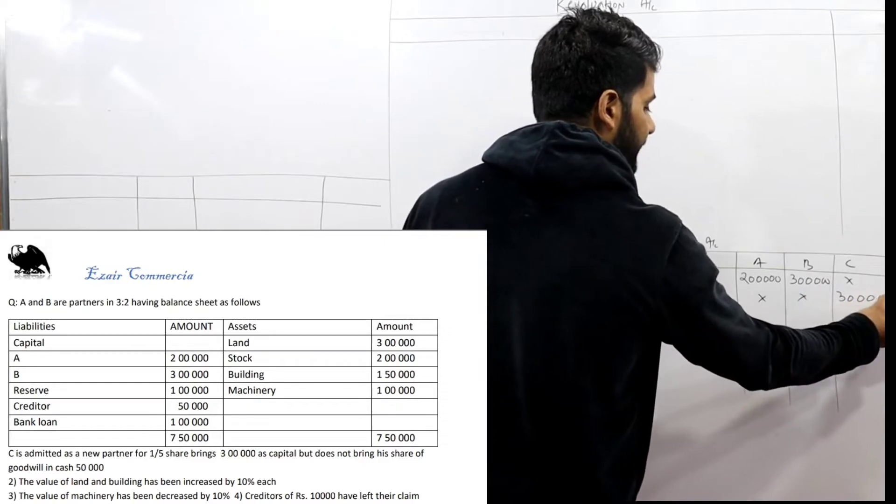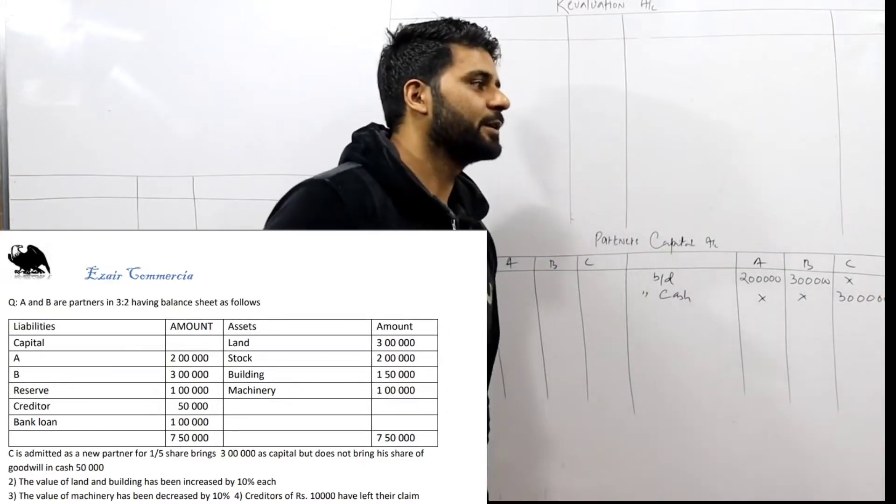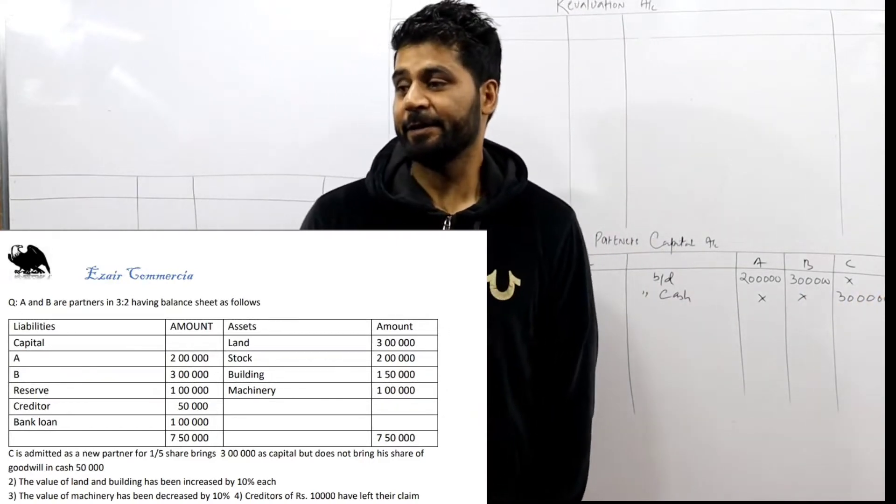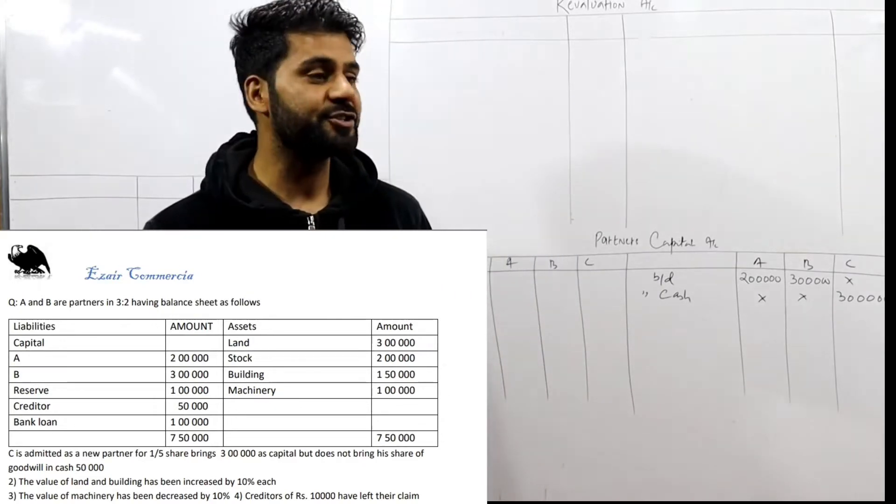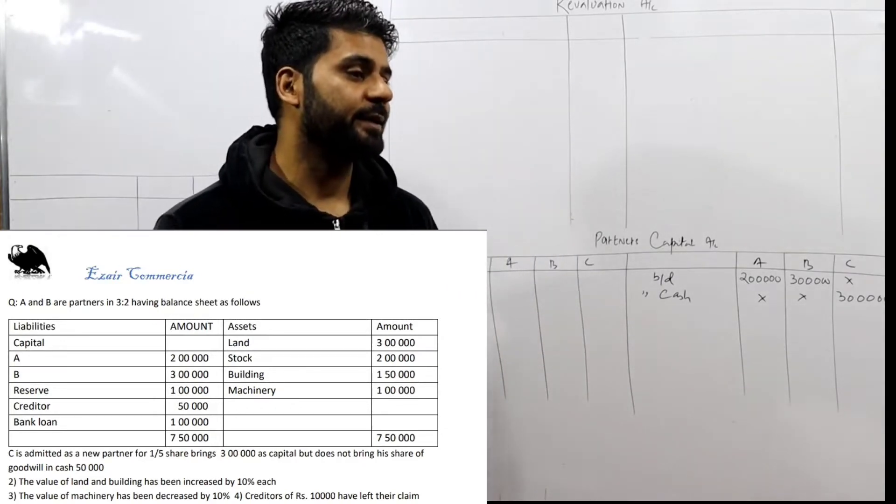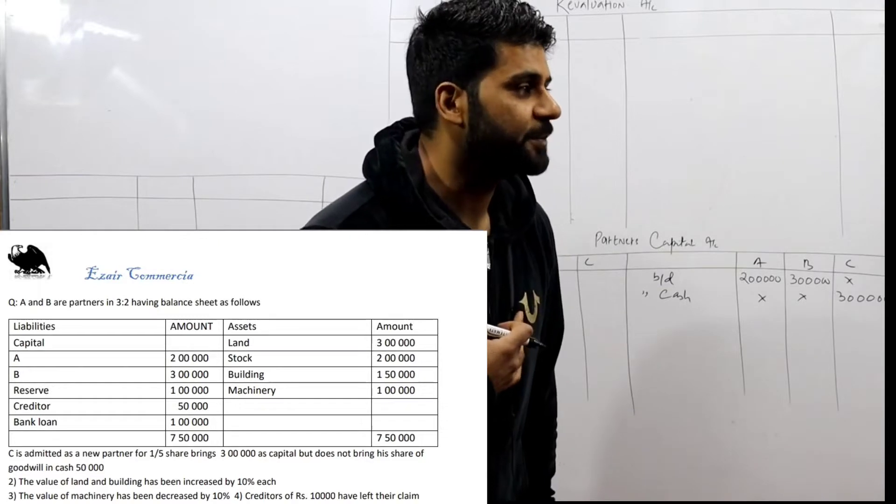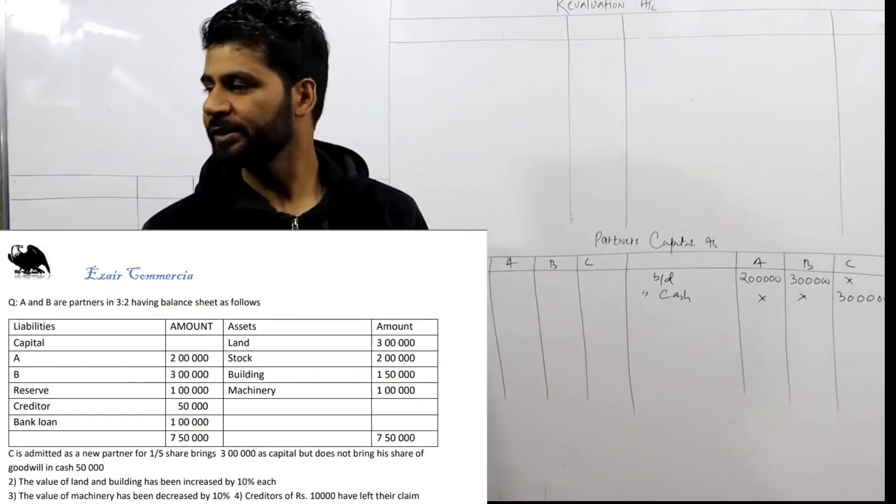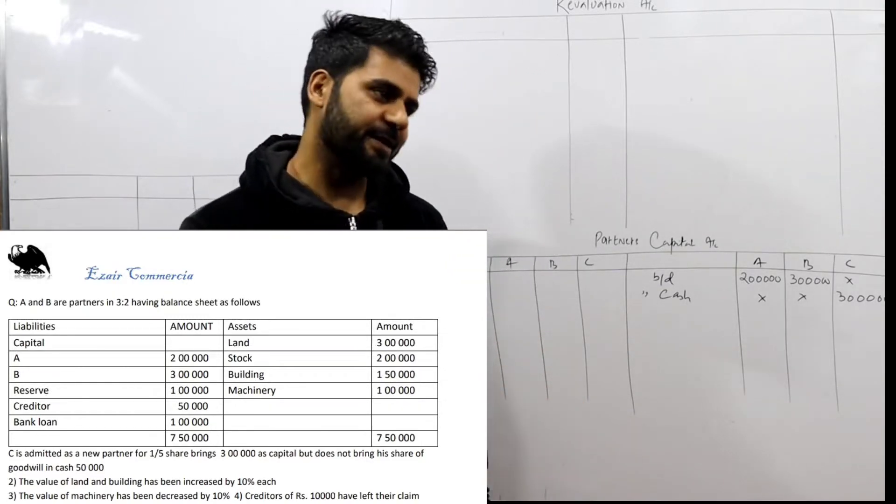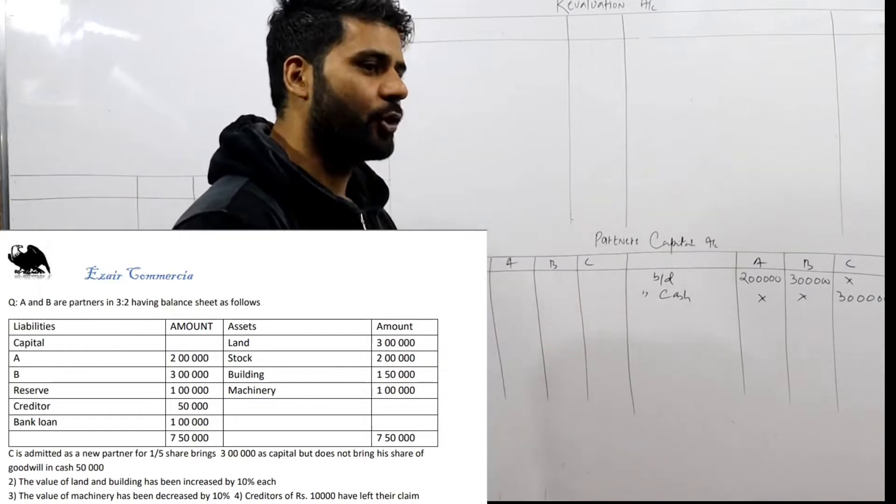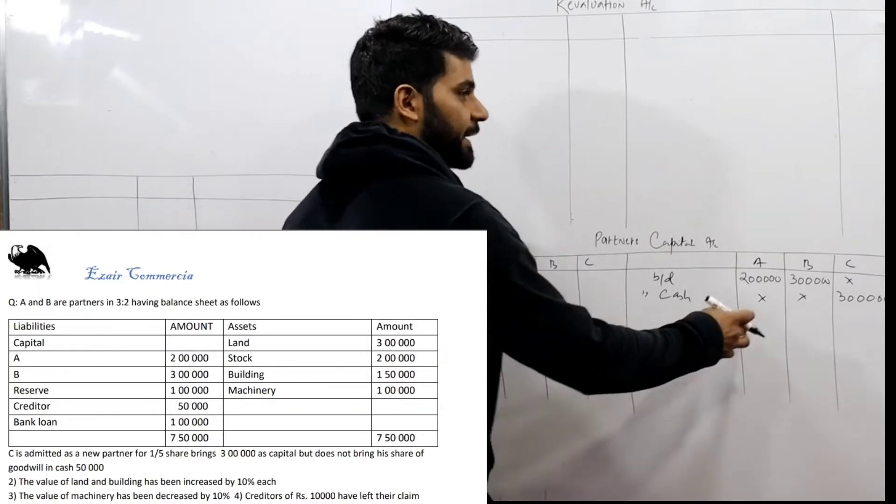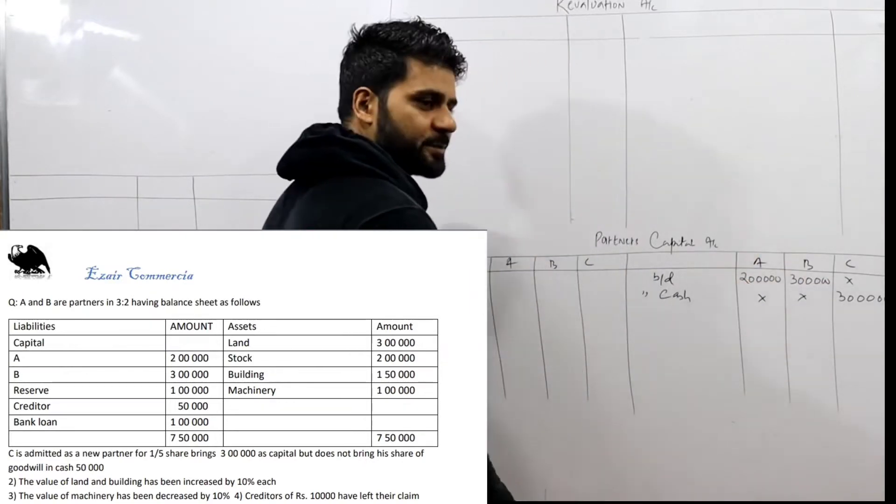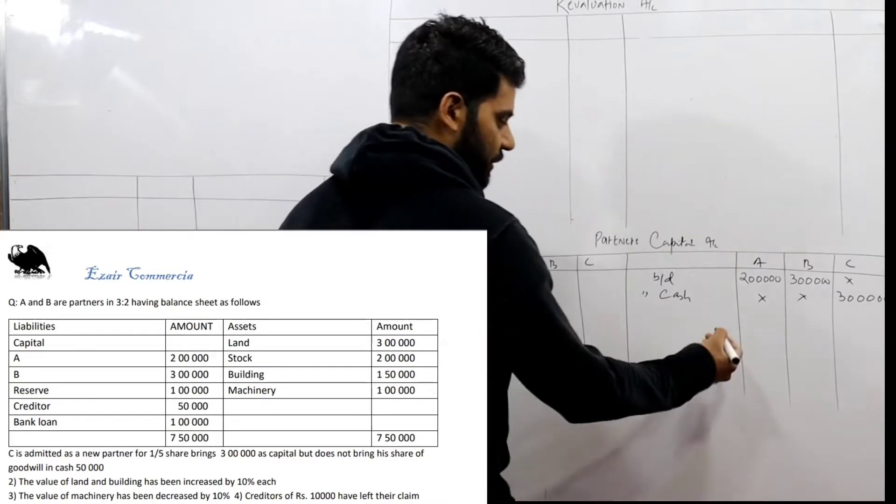Keep this in mind, my dears. It says he does not bring his share of goodwill. He doesn't bring his share of goodwill in cash. That was 50,000. He should bring 50,000, and that 50,000 we should give to A and B as per sacrificing ratio.